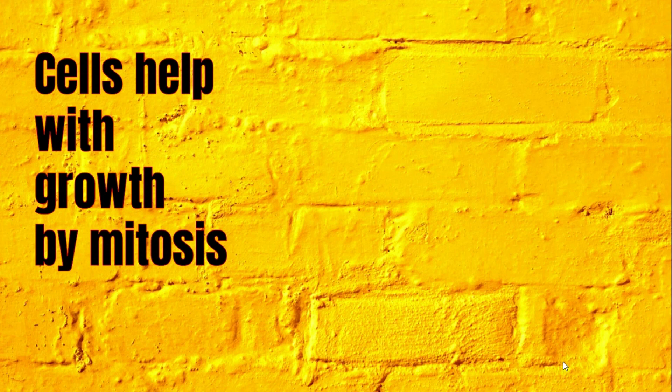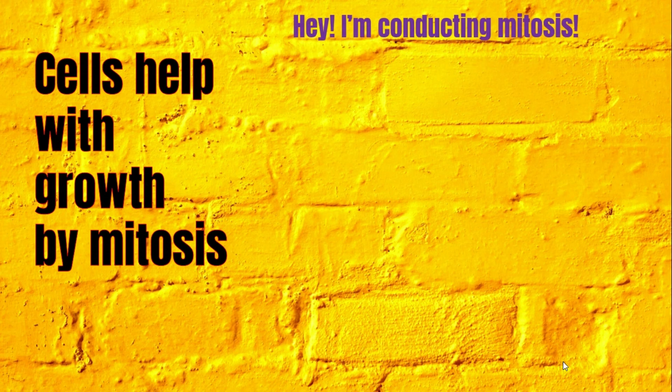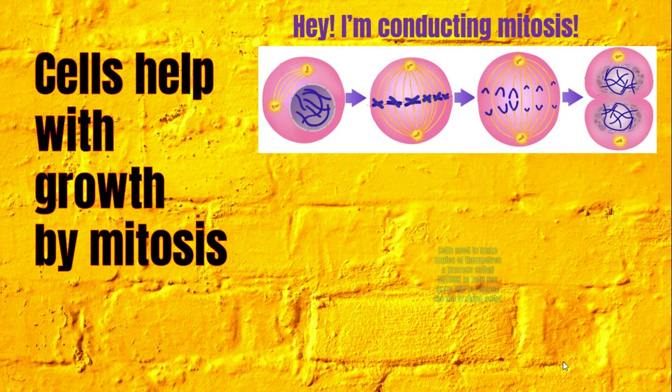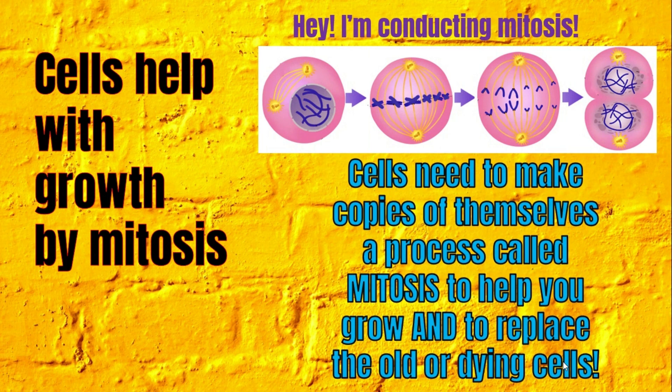Cells help with growth by mitosis. How do your cells grow? They need to make copies of themselves in a process called mitosis to help you grow and to replace your old and dying cells. They copy the DNA and split themselves in half, creating new cells to replace old and dying ones, and to help you grow.